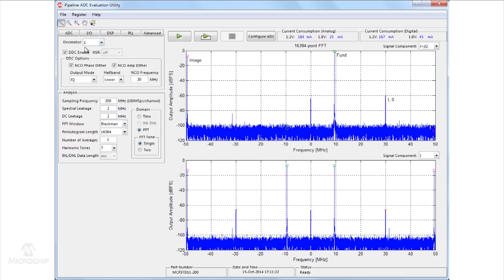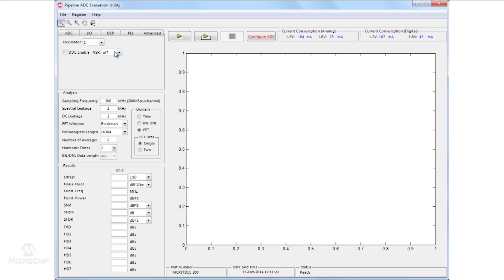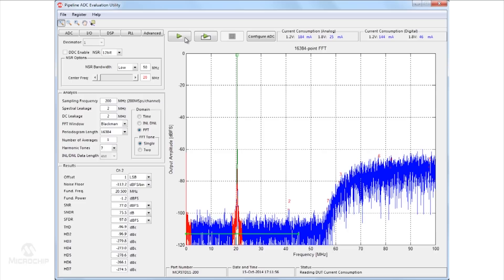The MCP37D11-200 and MCP37211-200 have a noise shaping requantizer feature that provides the ability to move the noise away from a bandwidth of interest for improved performance around those frequencies.